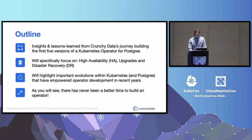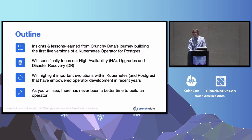In this talk, I'll be covering lessons learned from Crunchy Data's experience building five versions of a Postgres operator for Kubernetes. To do this, I will highlight three key areas of the operator architecture: high availability, upgrades, and disaster recovery.